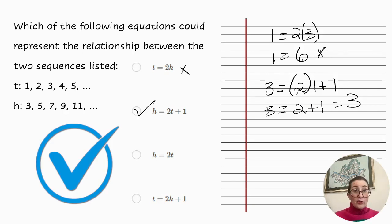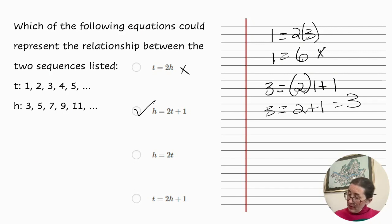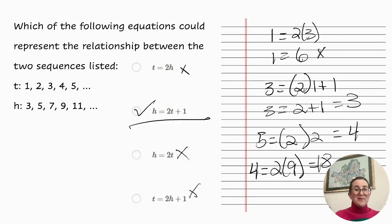But let's check the other two just in case. H equals 2T, so 5 equals 2 times 2 equals 4, so no. And lastly, T equals 2H plus 1, 4 equals 2 times 9, which is 18, so no. The only one that fits. So now the answer is clear.